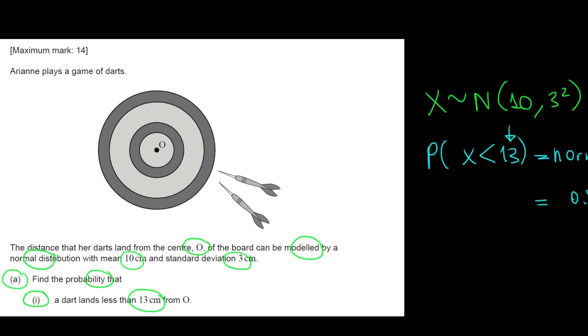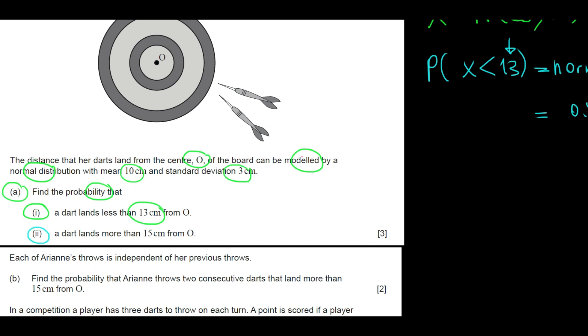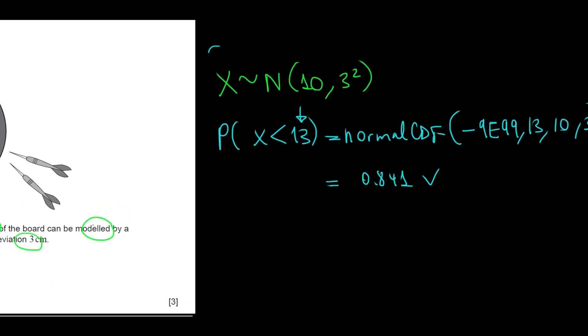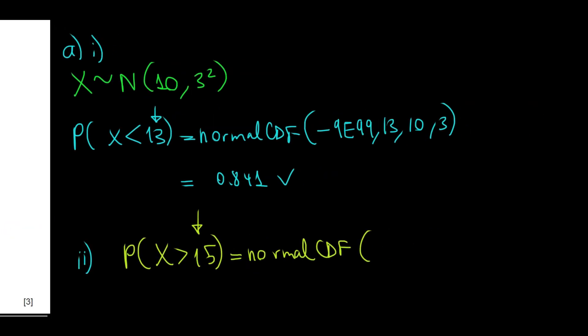Now, second question is find the probability that a dart lands more than 15 from O. Same logic, but now I will just write probability that x is above 15, since that's literally the question. I use the same distribution, the normal CDF. My lower bound now is 15 because I have to have at least 15, and then my upper bound is positive infinity. My mean is 10, my sigma is going to be 3. I work this out, and my answer would be 0.0478, rounded to 3 significant figures.